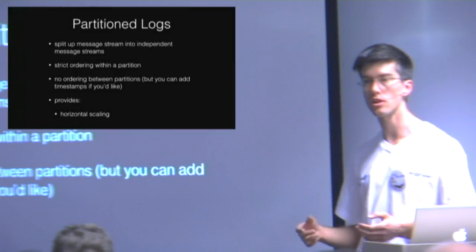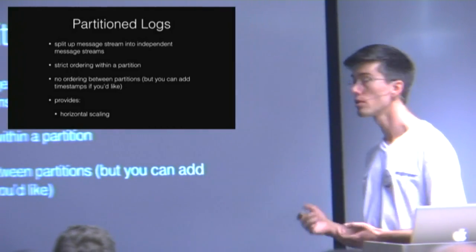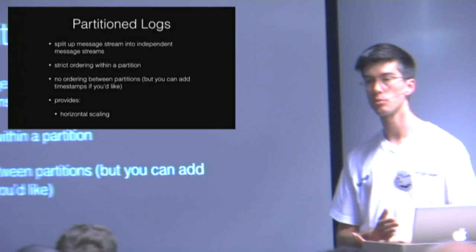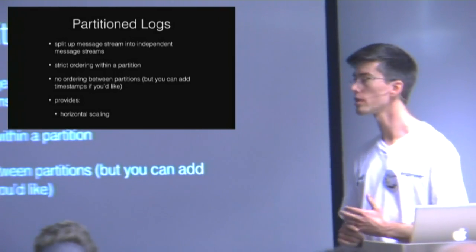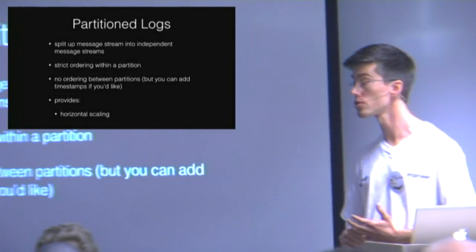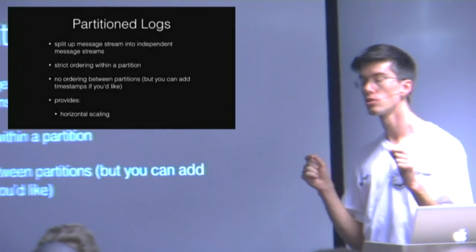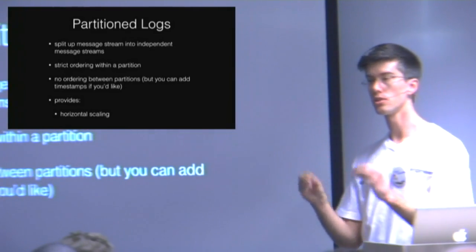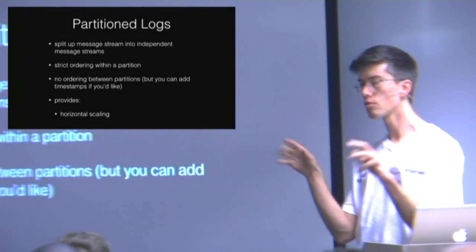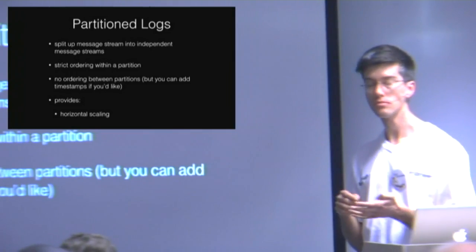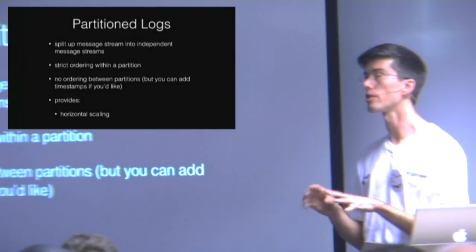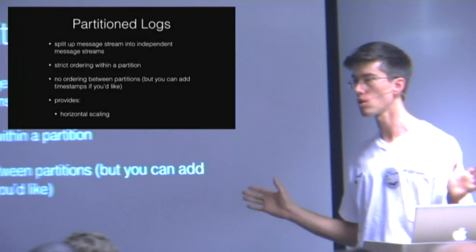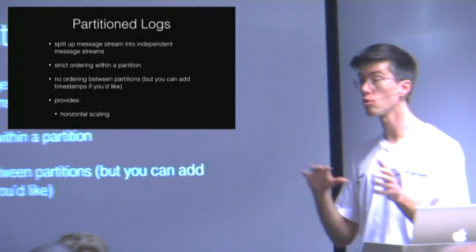I'm going to start using some of the jargon: the producers — the things that generate events — can talk to any one of the Kafka brokers. The things that are consuming events can consume from a particular partition. There's a restriction in Kafka which might sound a bit weird at first but gives you a lot of performance advantage: only one consumer within a group can read from a particular partition. So if you have four workers in your service and 20 partitions, you split them up between your workers — that's a hard rule. You can fire up more workers and reshuffle partitions though.